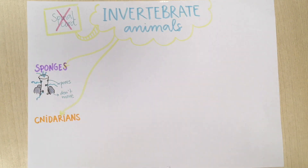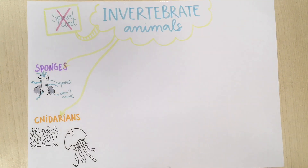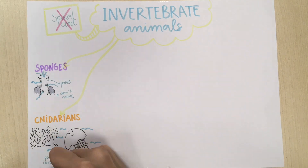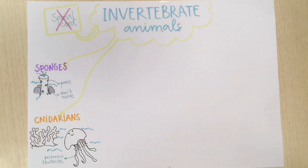The second group is cnidarians. Cnidarians include jellyfish and corals, so they are aquatic. Jellyfish have a jelly-like body mostly made of water. They also have poisonous tentacles that can sting you.